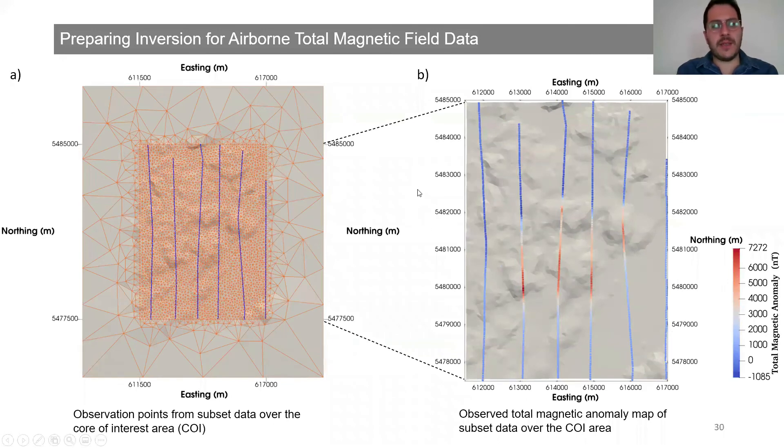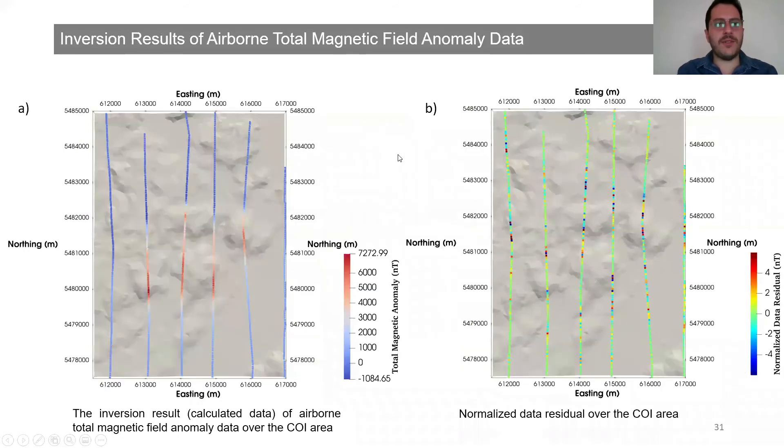Like we did for the gravity data, we also did the same processing step before running the inversion of airborne total magnetic field data. We generated the subset data from the observation points. Then in order to obtain the total magnetic anomaly map, we subtract the daily strength from the total magnetic intensity map. So the data that goes to the inversion is total magnetic anomaly from the survey. Here are the inversion results of airborne total magnetic field anomaly data. Figure A shows the calculated data of the total magnetic field anomaly data. Figure B shows the normalized data residual over the core area.